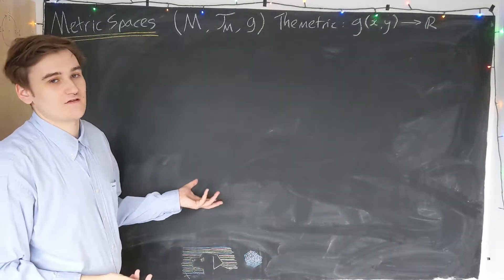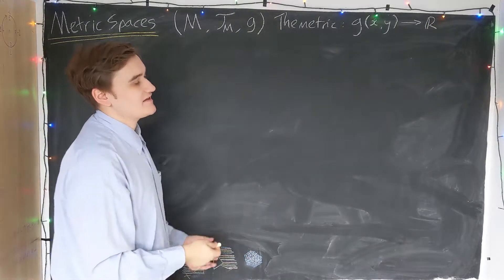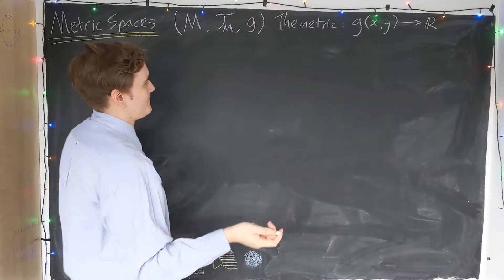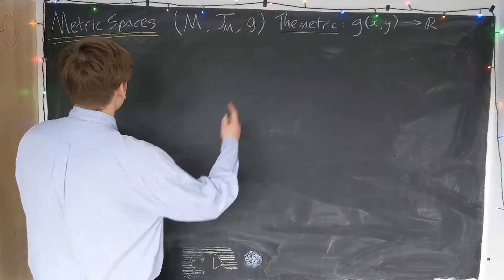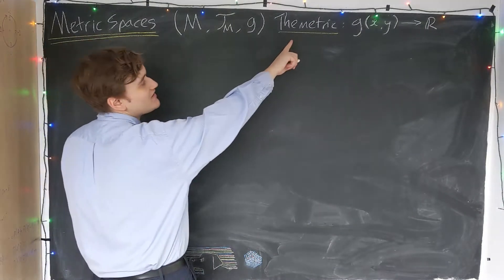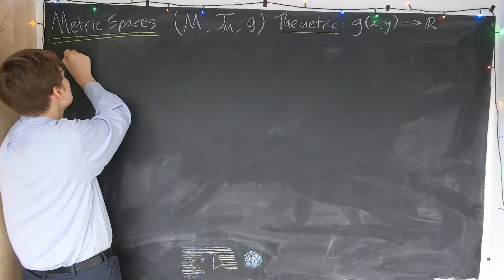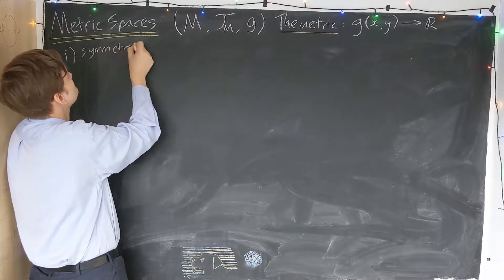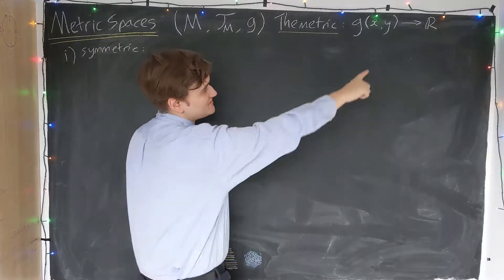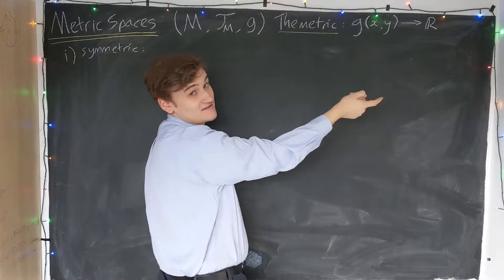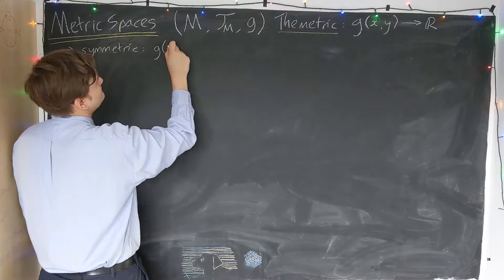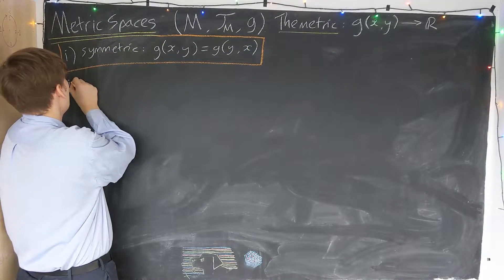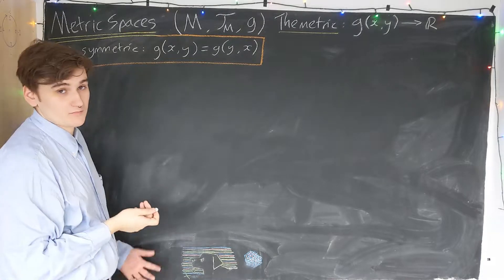The interpretation that this metric has is that it effectively represents the distance between these two points. I'll just quickly write down that this metric has to satisfy two properties. The metric has to be symmetric, which essentially means the distance between x and y is the same as the distance between y and x.